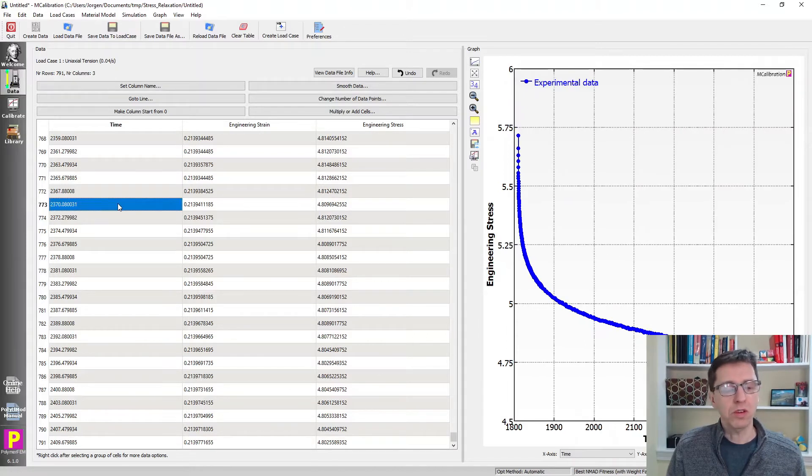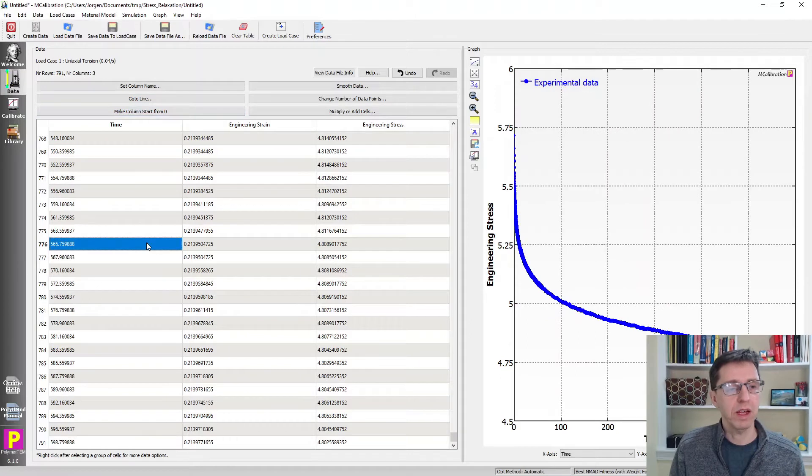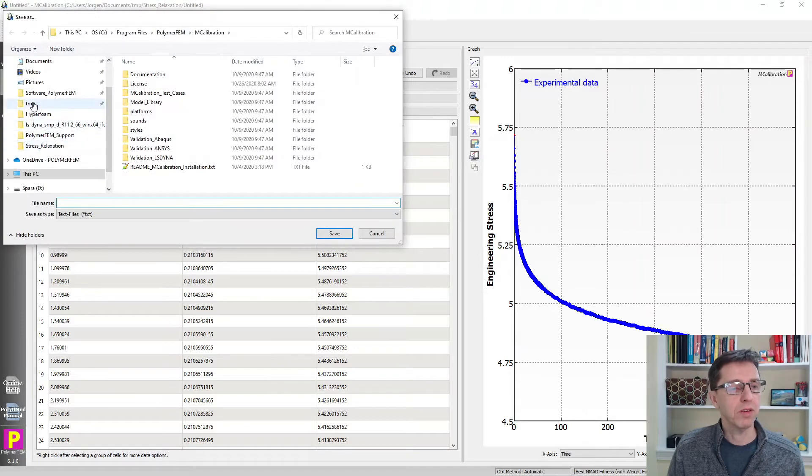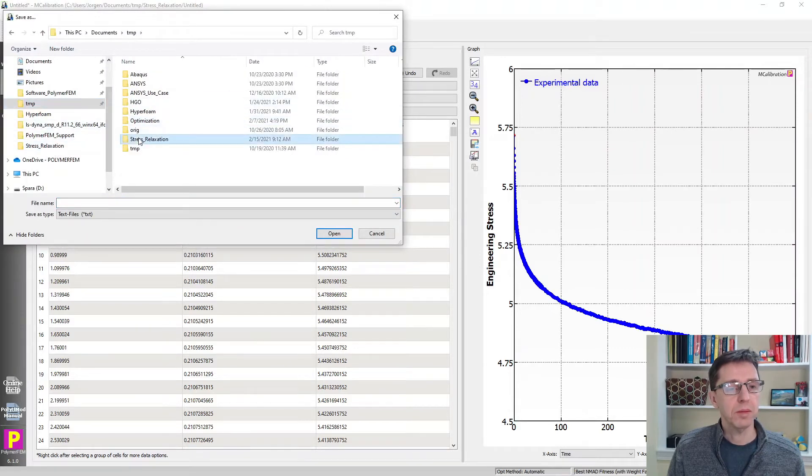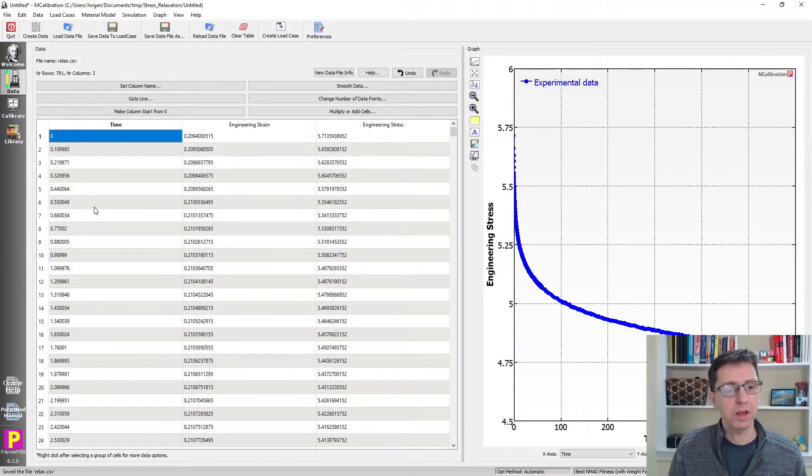To use this in MCalibration, we have to make this data start from zero, so I shift it up like that. We can see the whole segment is about 600 seconds, so it's 10 minutes long. I'm going to save this file to my hard drive. I'm going to call it relax. There it is.